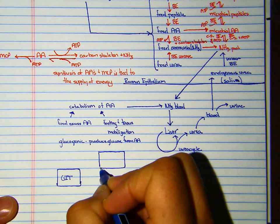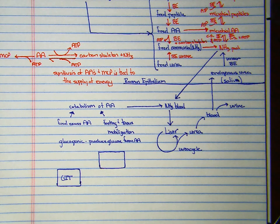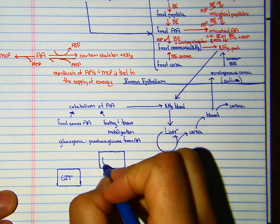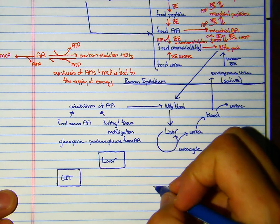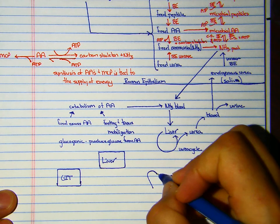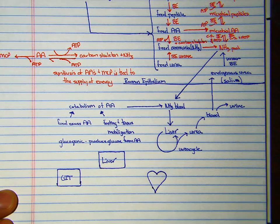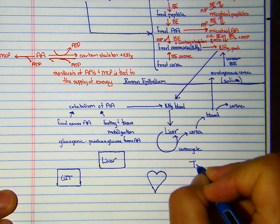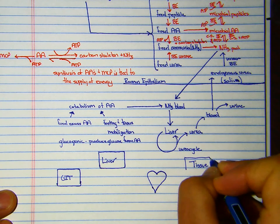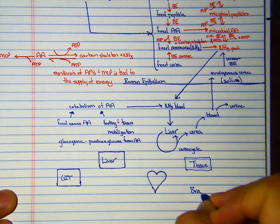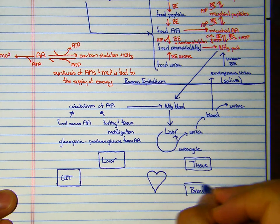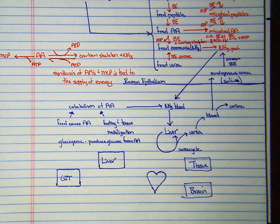Here we have the GIT—the gastrointestinal tract. We have the liver, and then we're going to have a heart. Over here we have tissue, all the other tissues, and we have the brain, because we like the brain and we try to protect the brain.